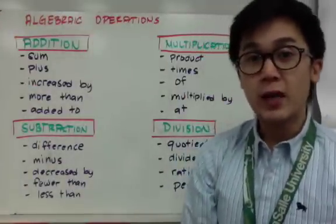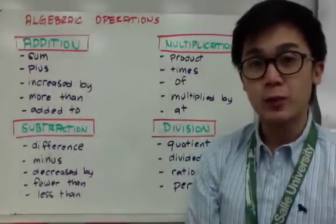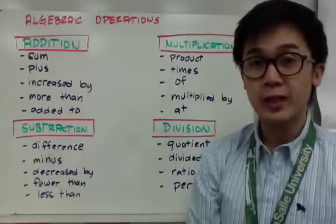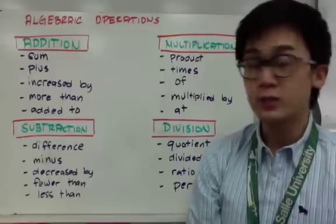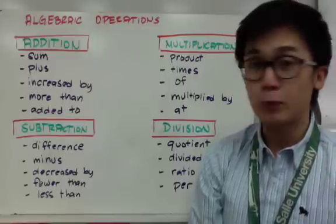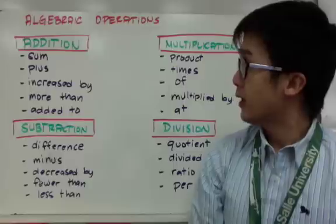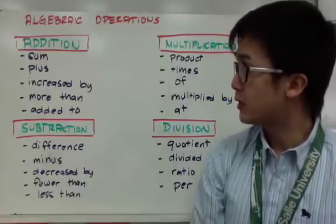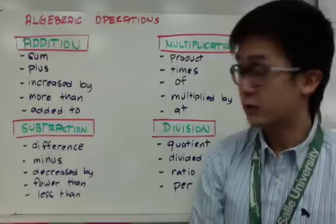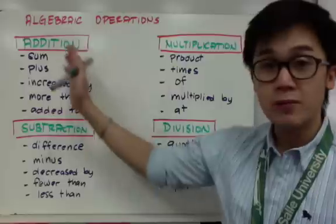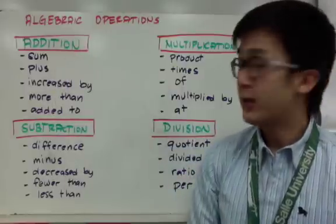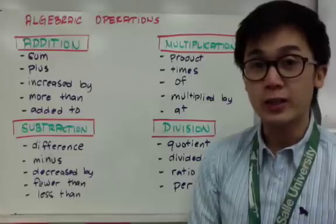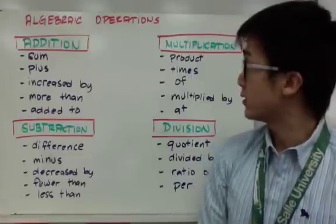To understand writing and translating algebraic expressions into numerical expressions, you need to remember the words associated with each mathematical operation. I'm going to show you the four basic operations and the words associated with each one. For addition, the words are: sum, plus, increased by, more than, and added to. If you see these words in an algebraic expression or equation, you'll know that you are adding.